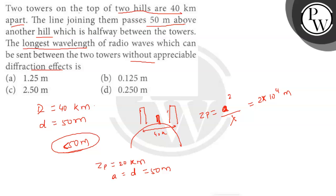From here we can find lambda that will be equal to A squared upon 2 into 10 to the power 4. So A squared will be equal to 50 into 50 upon 2 into 10 to the power 4. It will be equal to 0.125 meter.